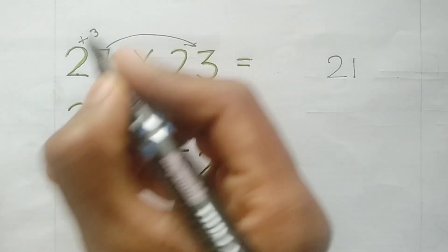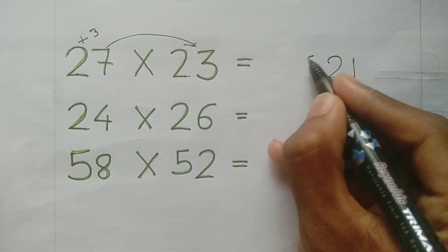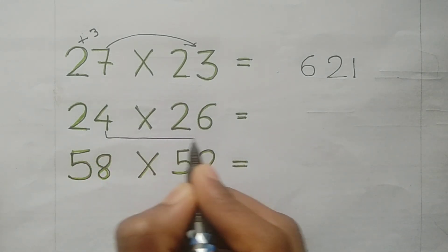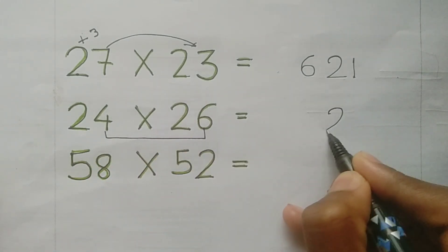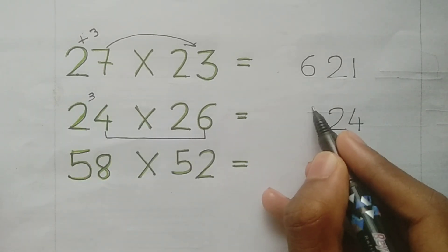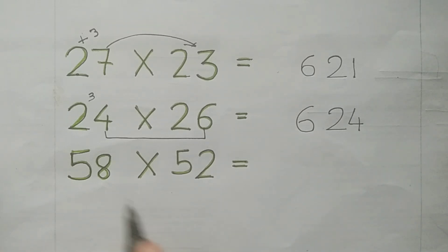Next problem: 24 into 26. The second number is 24, next 2, the next number. 2 into 3 is 6, 624 answer.